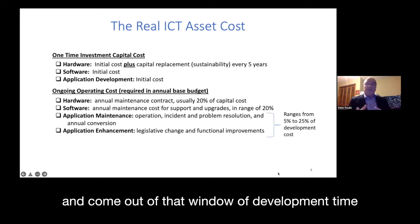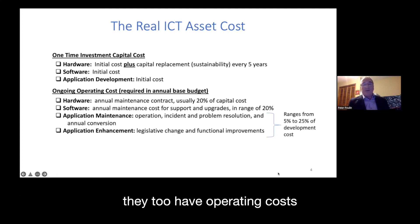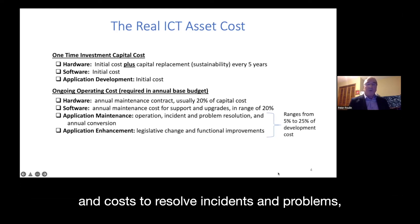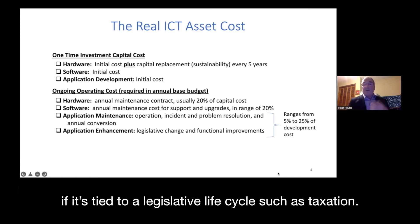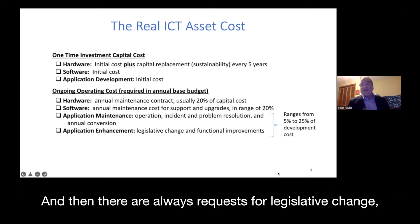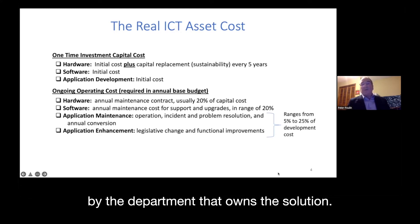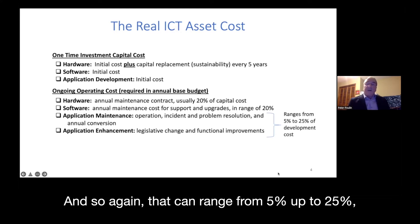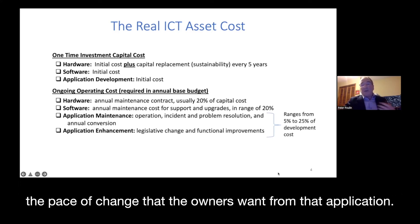Applications themselves, once implemented into production and past the development window covered by the initial capital budget, also have operating costs — costs to resolve incidents and problems, annual conversion of the application if it's tied to a legislative life cycle such as taxation, plus requests for legislative change and functionality improvement. These costs range from 5% up to 25% of the application investment, depending on the pace of change the owners want.